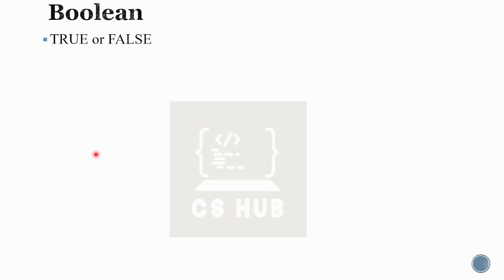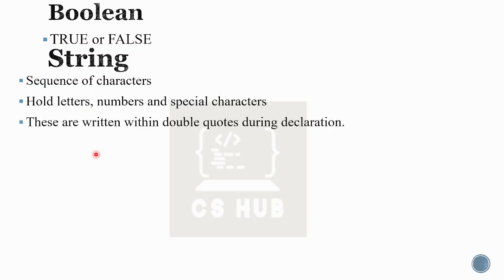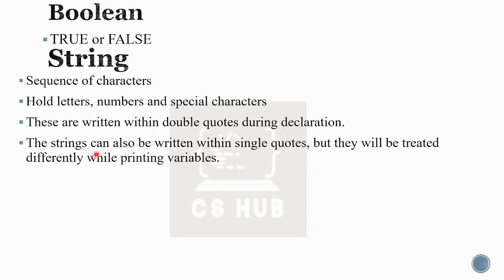For boolean, the value is simply true or false. For string, it is a sequence of characters — you can use double quotes. A string holds letters, numbers, special characters, etc. You can also use single quotes. However, single quotes and double quotes are treated differently when printing variables.